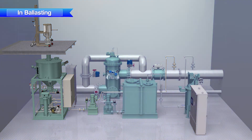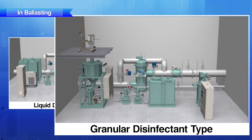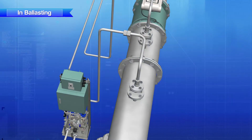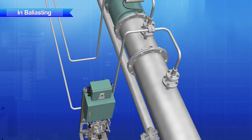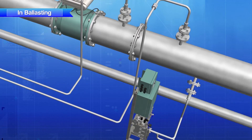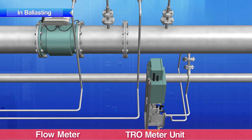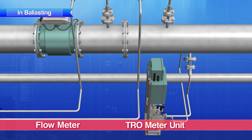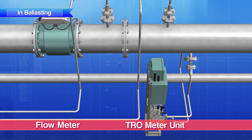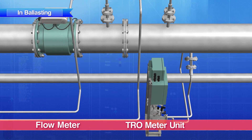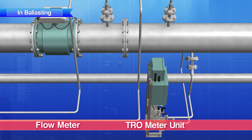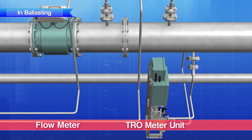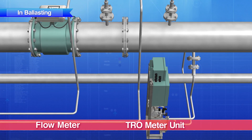Whether liquid or granular, the volume of disinfectant to be injected is calculated automatically based on data from the TRO meter unit and the flow meter. Just before the disinfectant is injected into the ballast tank, the residual chlorine concentration level is automatically adjusted to 2.5 ppm.